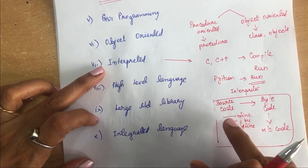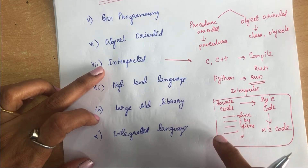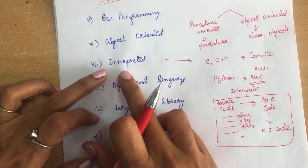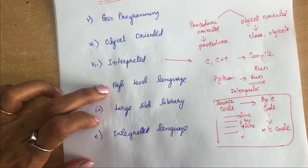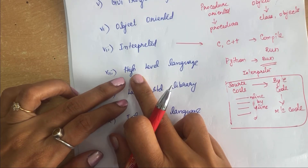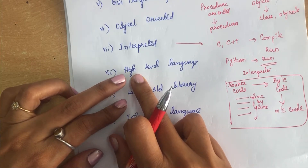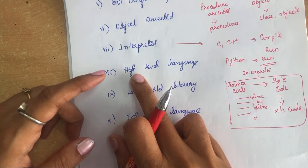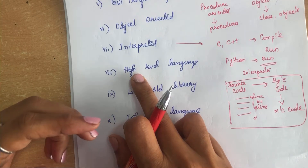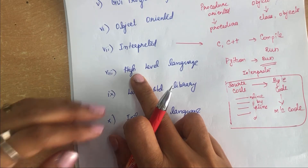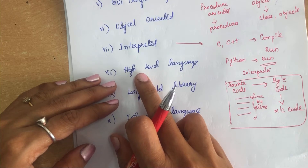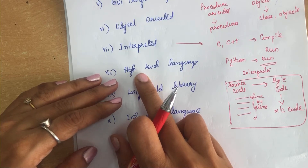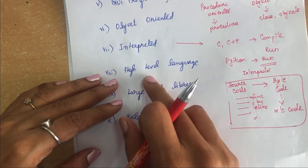The interpreter executes and checks for errors line by line — that is why it is called an interpreted language. Next, Python is a high level language because you do not need to remember the system architecture or manage memory. Everything is done by the software itself, making it programmer friendly, and it executes programs at a faster rate.